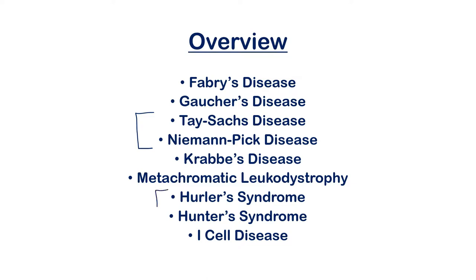The same goes for Hurler, Hunter, and I-cell disease — all present very similarly but with little differences. Krabbe's disease and metachromatic leukodystrophy also present very similarly. We'll break it down into those clusters and look at mnemonics for each one so you can get the questions right without having to put too much thought into it.